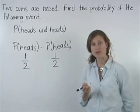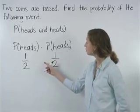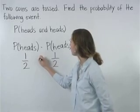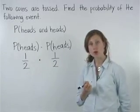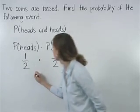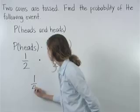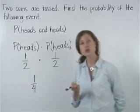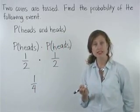Now we simply multiply one half times one half, which gives us one fourth. So the probability of tossing heads and heads is one fourth.